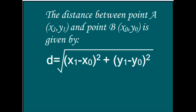The distance between point A with coordinates x1, y1, and point B with coordinates x0, y0, is given by d equal the square root of the quantity x1 minus x0 squared plus the quantity y1 minus y0 squared.